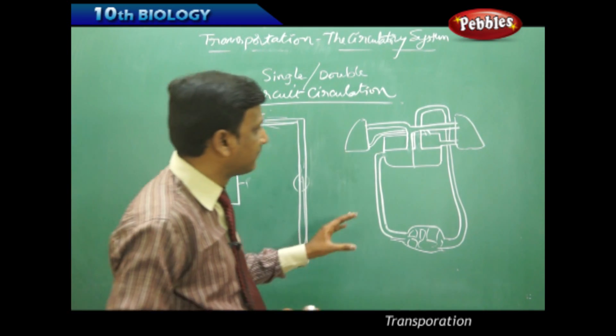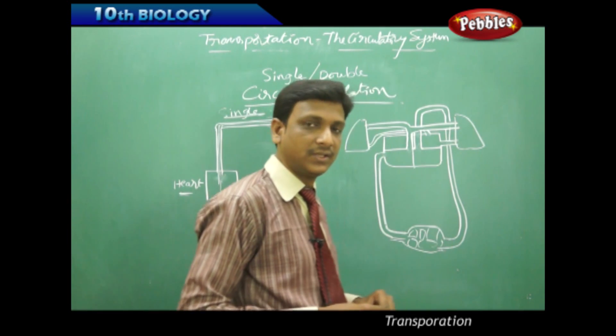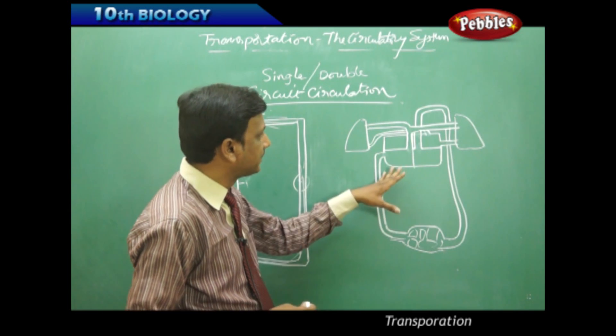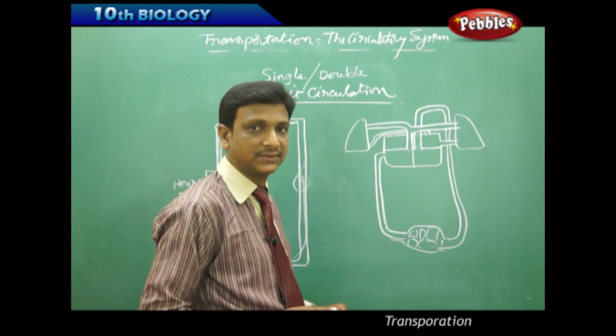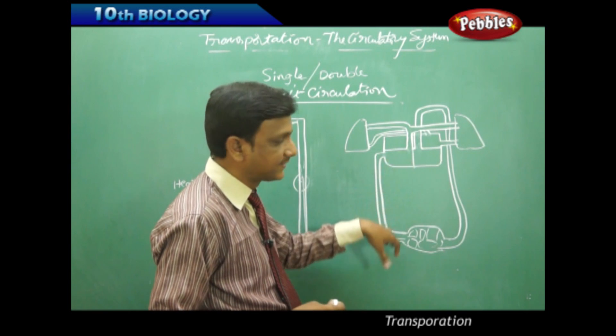Whereas in higher animals, we find double circuit circulation. Here, you will find two circuits. One circuit is between heart and lungs. The other circuit is between heart and body parts.